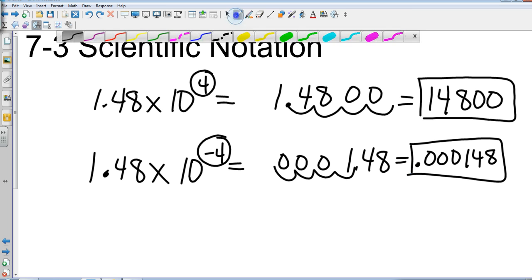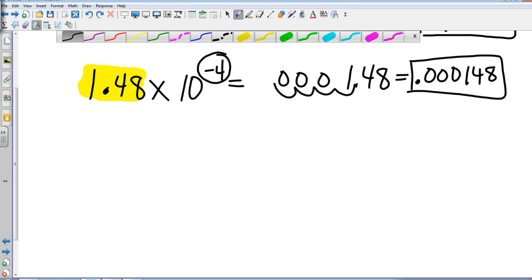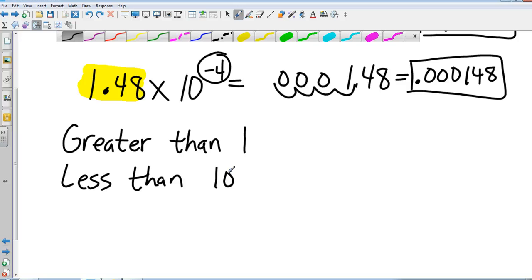Now, you'll also notice that my initial number is 1.48. There is a rule for that. That number has to be greater than 1 and it also has to be less than 10. So 2.47, 9.2, 9.8, 1.3, any of those, as long as they're greater than 1 and less than 10. Keep that in mind, and we'll get to an example here in just a minute where we're going to have to change a value because of that rule.